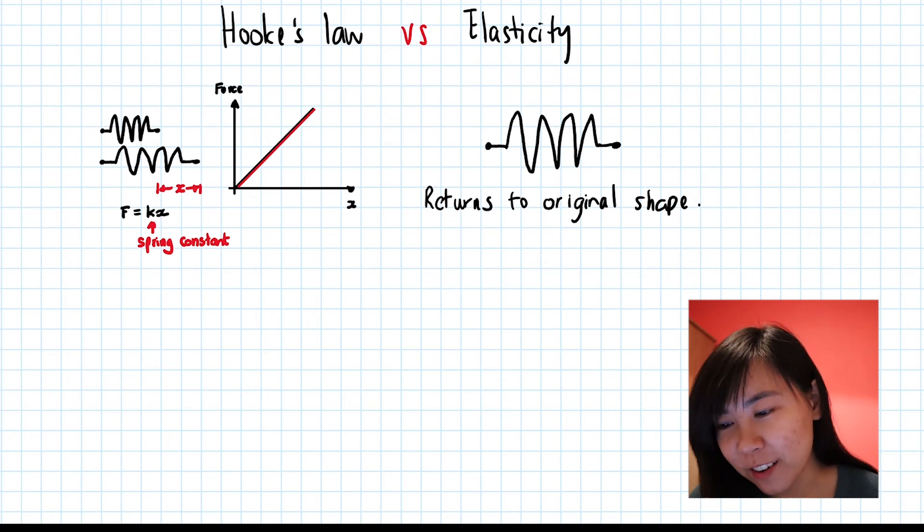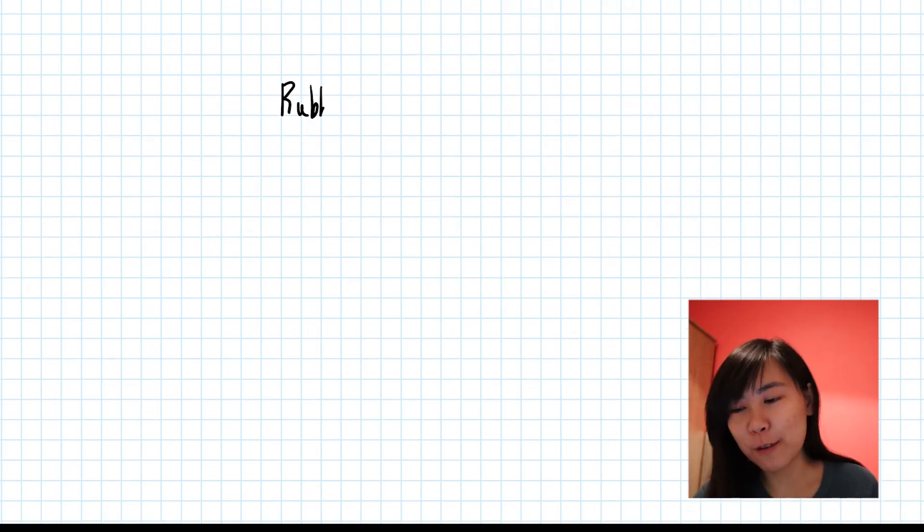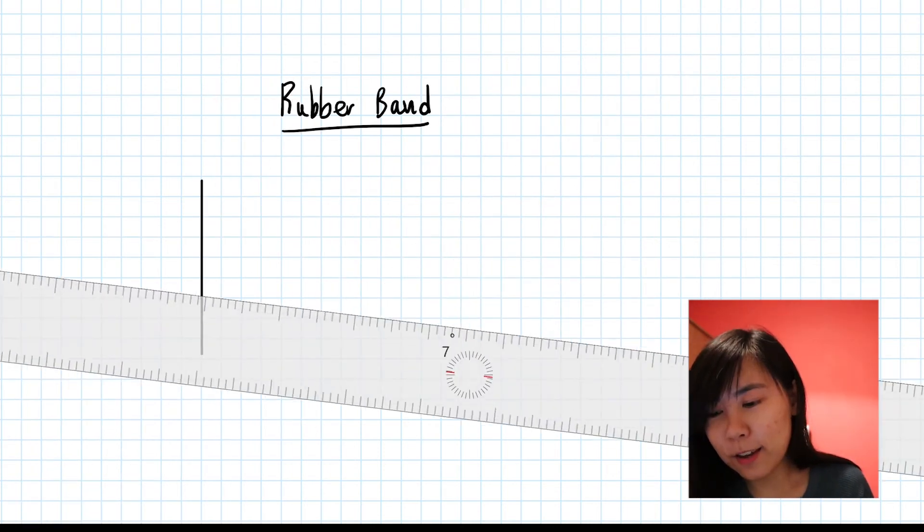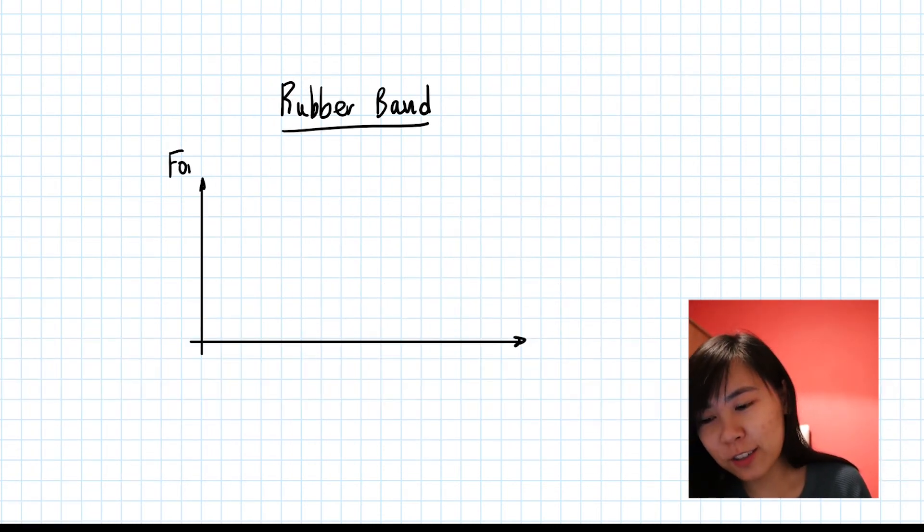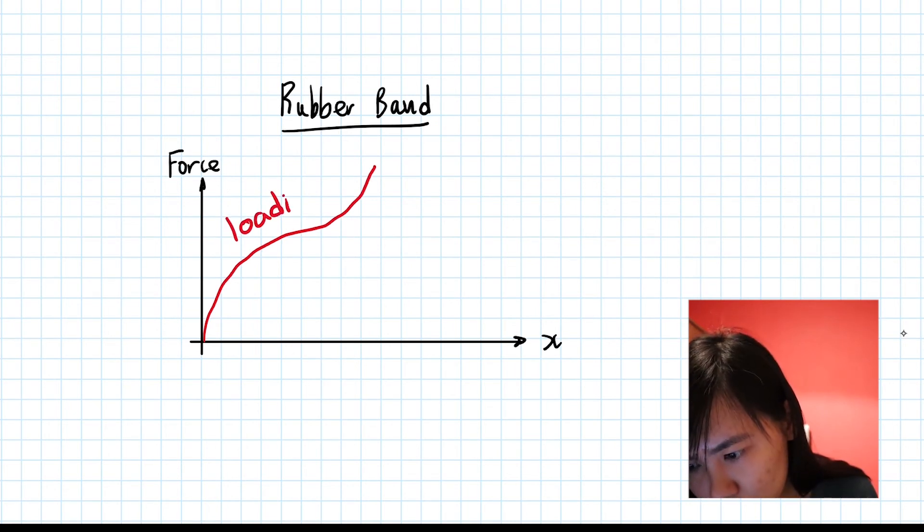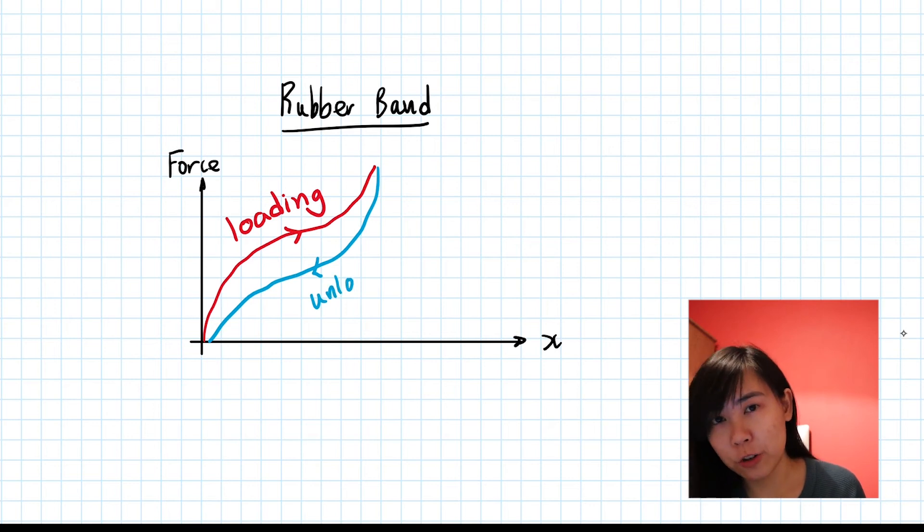But take the example of a rubber band. Again, I'm going to plot a graph of stretching force against the extension. In red, I'm going to sketch the stretching of the rubber band. But when I unload it, or in other words I'm unstretching it, you can see that in the blue it follows a lower curve.